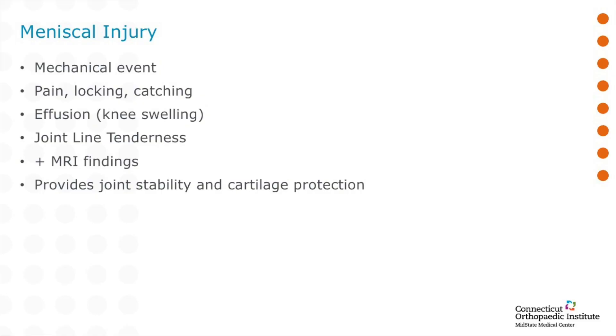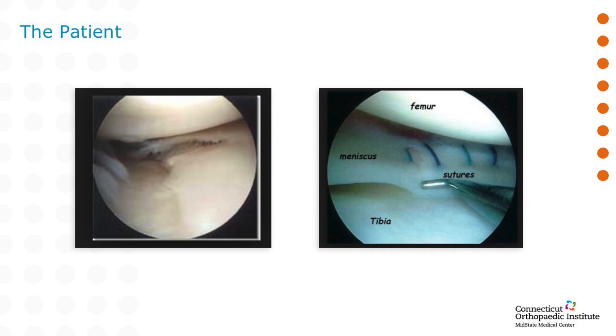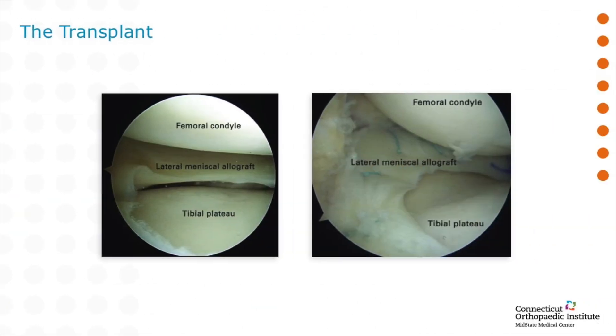Now that we've discussed cartilage injuries, we can't neglect the meniscus. The meniscus is that C-shaped cartilage disc within your knee that provides stability as well as shock absorber capability. What happens when you injure your meniscus? Usually it occurs with a turning or twisting event. Most patients will describe pain, swelling, and locking, and an MRI will really define the injury to the meniscus. During arthroscopic surgery, we're able to assess the degree of the meniscal tear. Our goal is to try to fix this — we either fix it by removing the part that's torn, or place small stitches arthroscopically through the camera at the time of surgery to aid in its healing process.